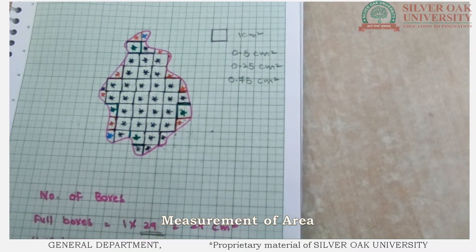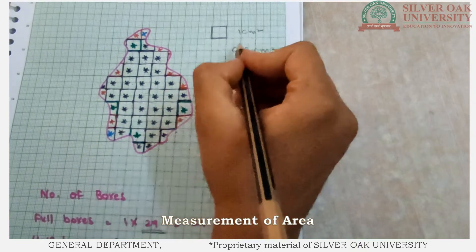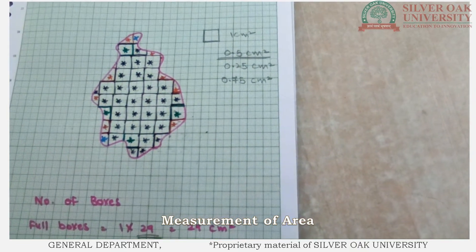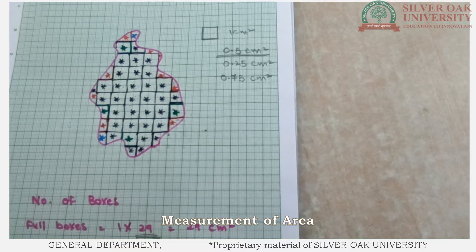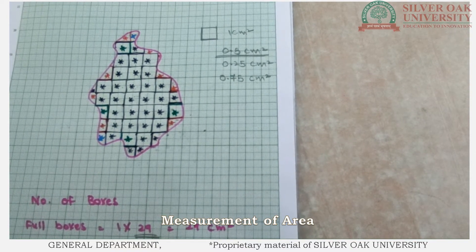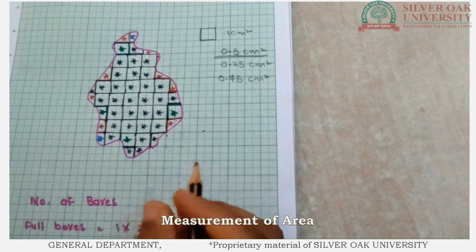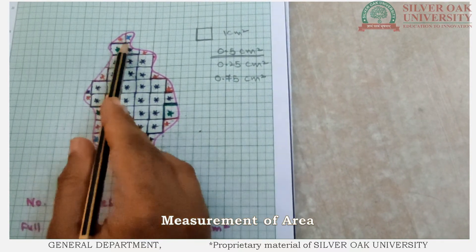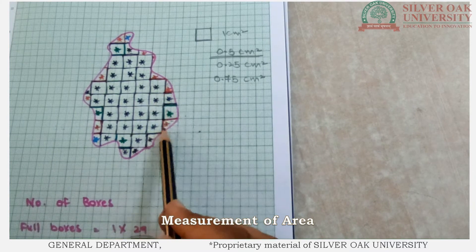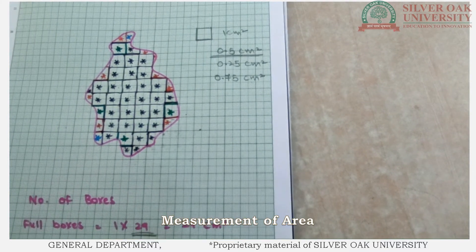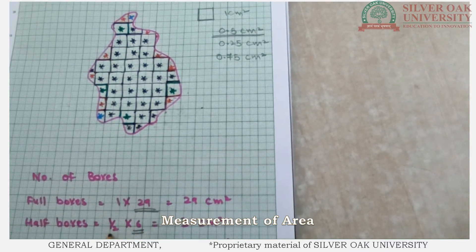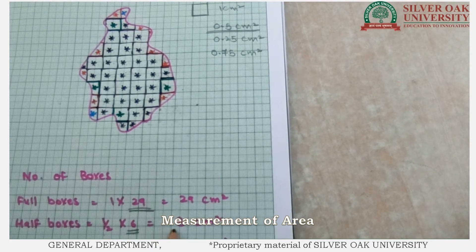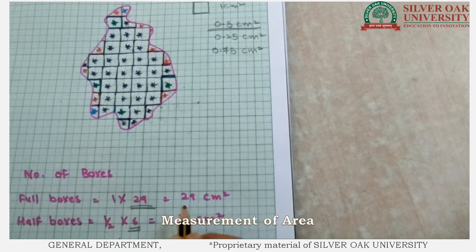Similarly, we have to calculate the half boxes — those with an area of exactly 0.5 centimeter square. The half boxes are indicated by the red color. Counting them: 1, 2, 3, 4, 5, and 6. Total half boxes are 6. Multiplying by the half box area gives an area of 3 centimeter square for the half boxes.